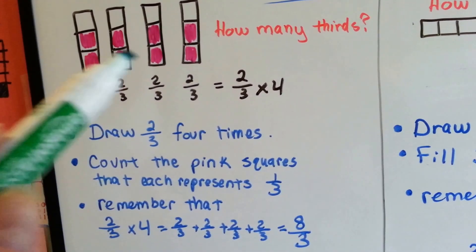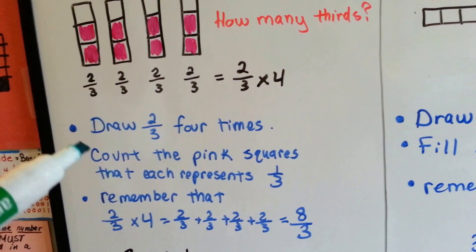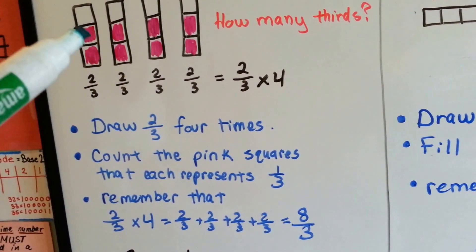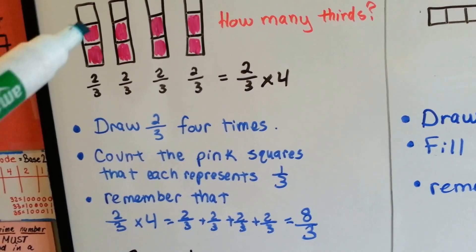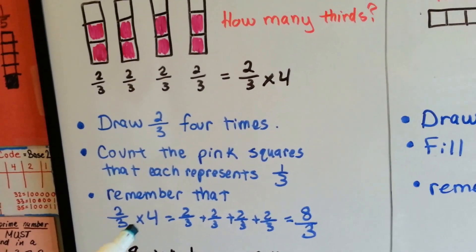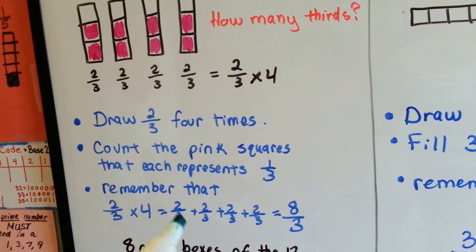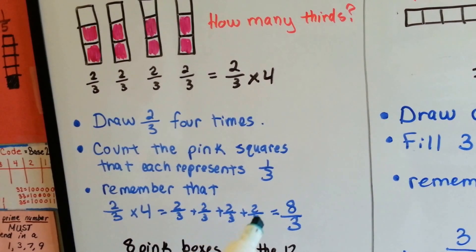So we drew the two-thirds four times. We counted the pink squares. Each little square represents one-third, so we filled in two-thirds. And we remembered that two-thirds times four is the same thing as two-thirds plus two-thirds plus two-thirds plus two-thirds.